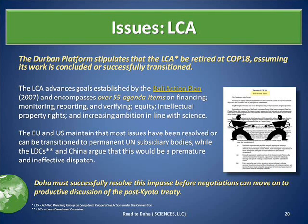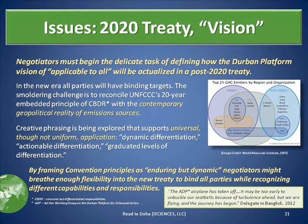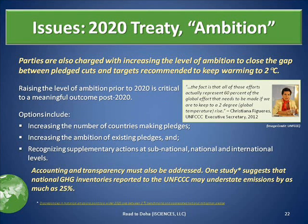The Durban platform stipulates that the ad hoc working group on long-term cooperative action under the convention be retired at COP18. Issues must be resolved or moved to permanent UN subsidiary bodies, but there is disagreement over whether retirement is appropriate. Negotiators must begin the delicate task of defining how the Durban platform vision of 'applicable to all' will be actualized in a post-2020 treaty. Creative phrasing and graduated targets are being explored. Parties are also charged with increasing the level of ambition to close the gap between pledged cuts and targets recommended to keep warming to 2 degrees — meaning increasing the number of pledging countries, increasing the target level of existing pledges, and recognizing other vehicles of ambition.